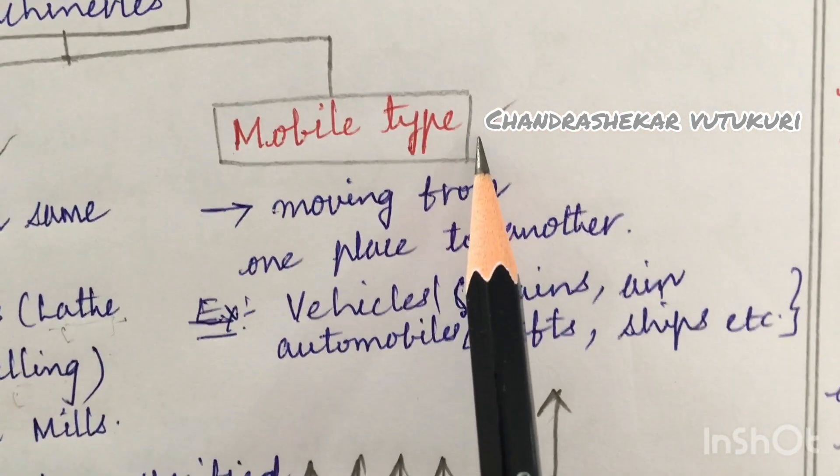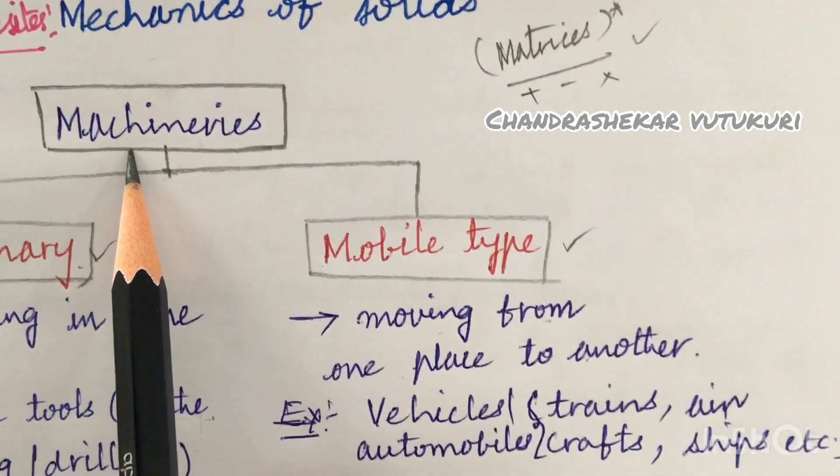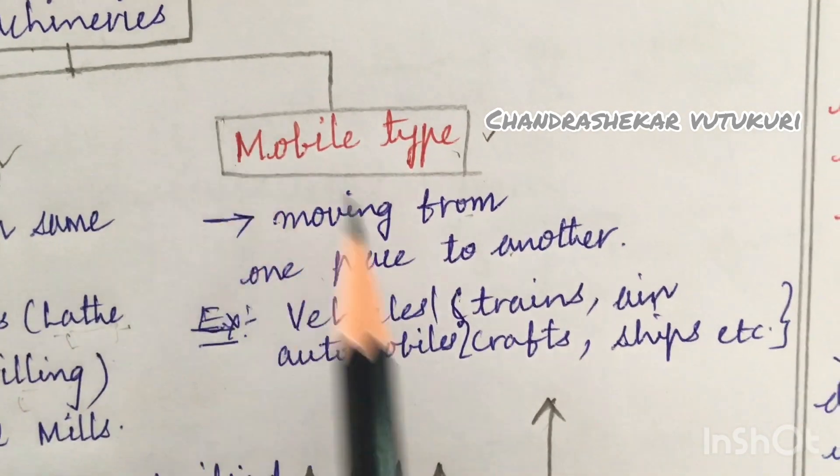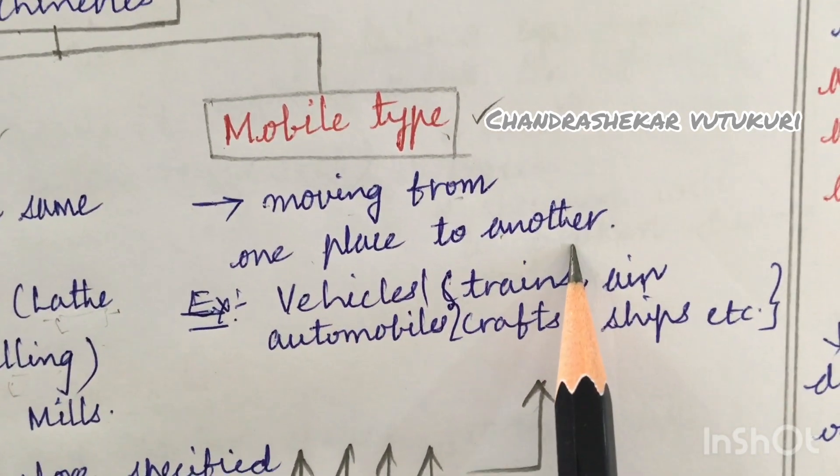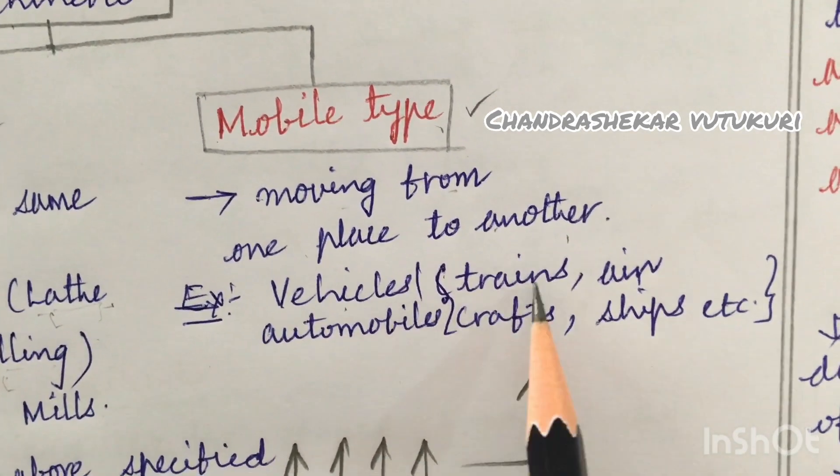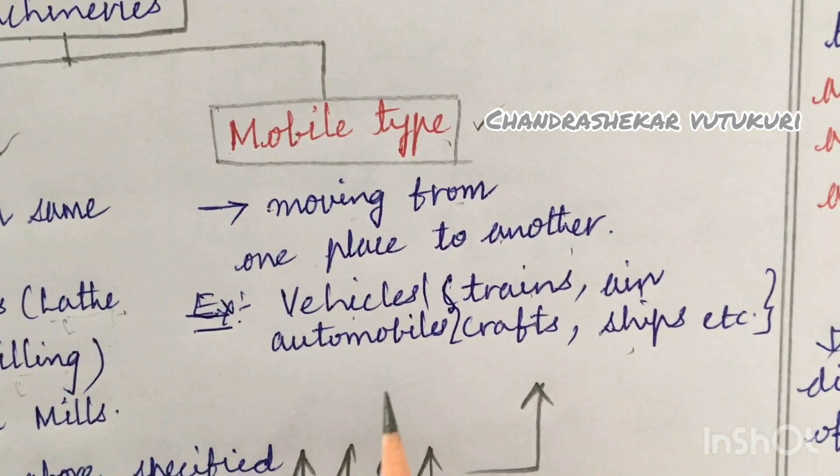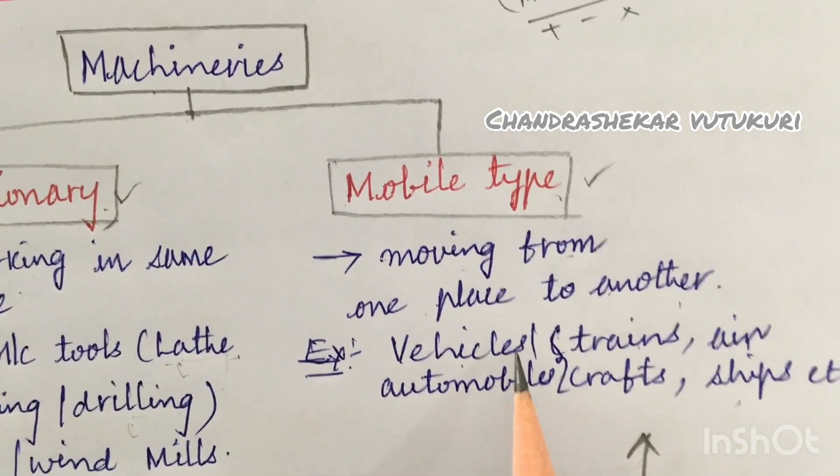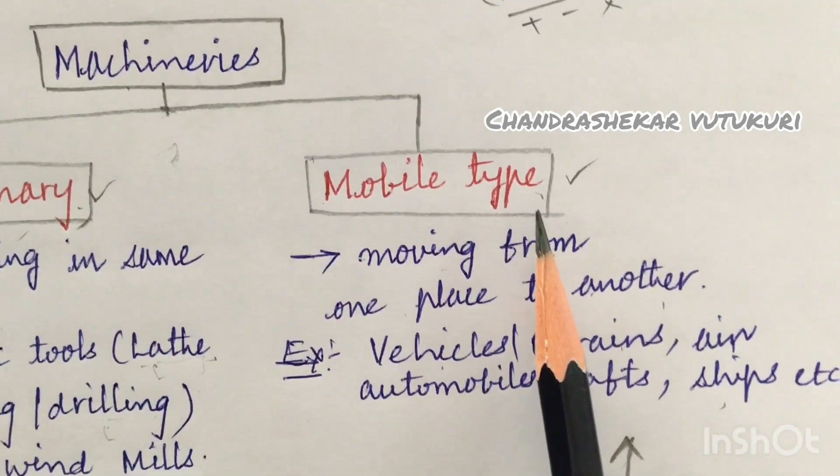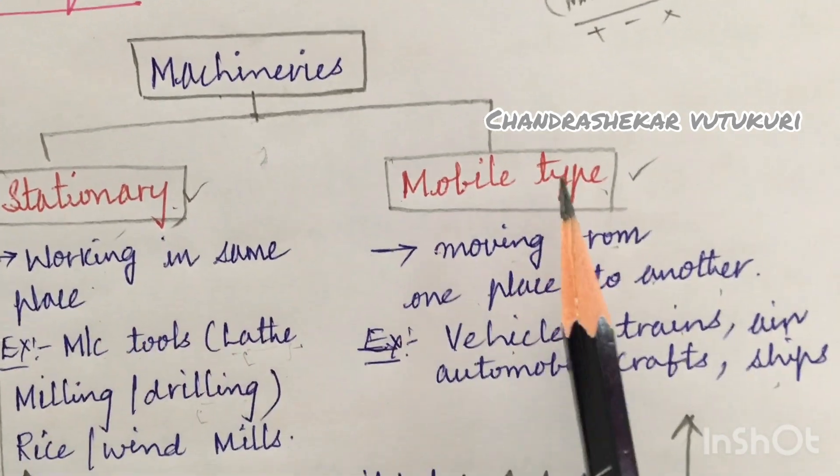The mobile type or moving type move from one place to another place. There are machineries in our daily life for comfort and luxury that are the moving type, such as they move from one place to another. Examples are vehicles - your motorbike, the train, aircraft, as well as ships. All the automobiles which we use in our day to day life come under machineries which are of the movable type.